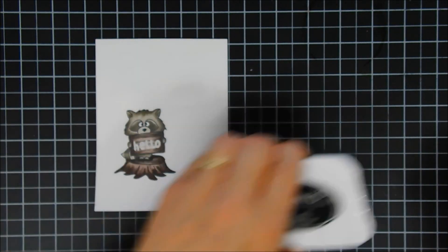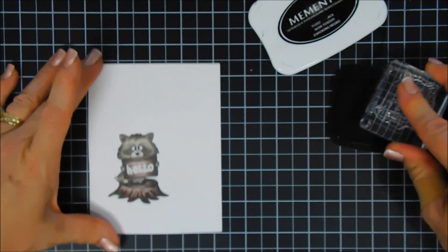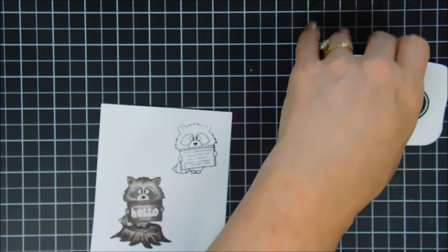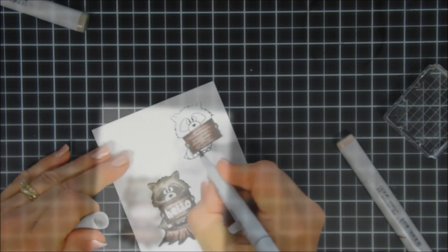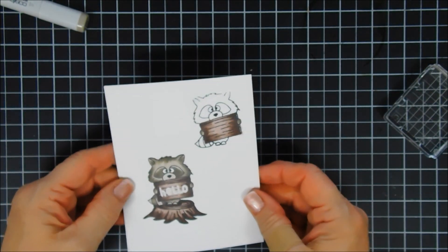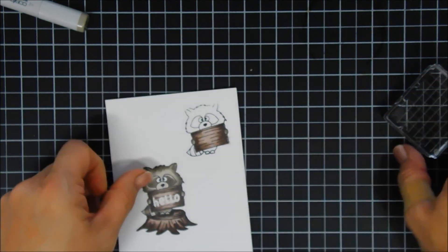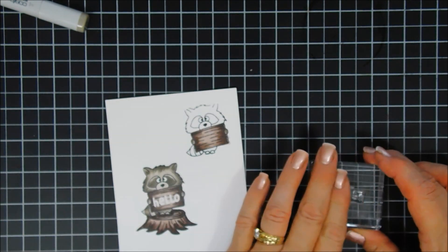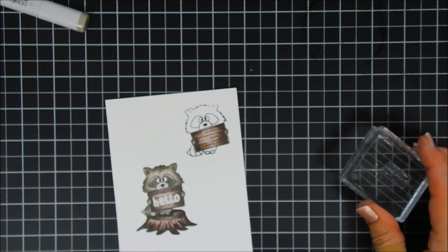But this time we're only going to color in the little wood sign in his little hands. I used the same colors that I used on my original image. And I thought this way we could pop up the little sign that he was holding just to give an added little extra detail.